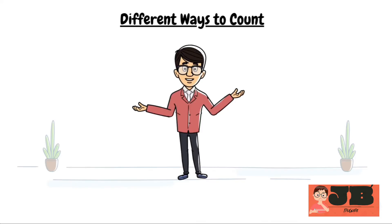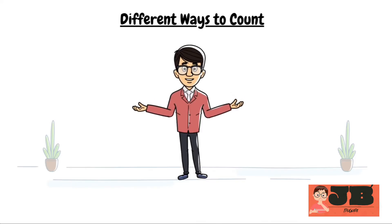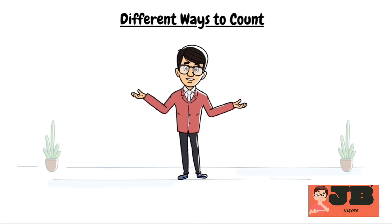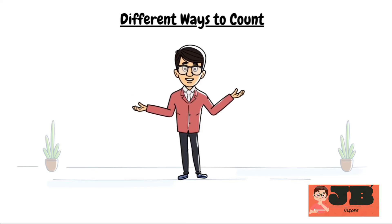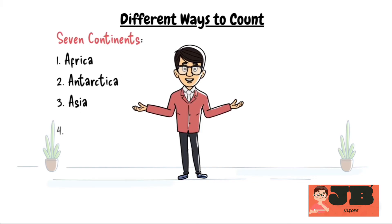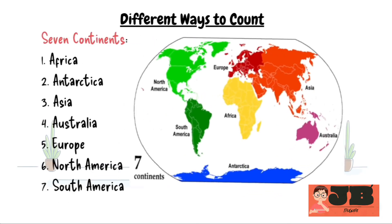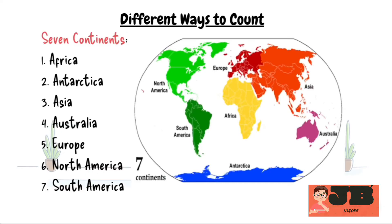The most widely adopted and commonly used count is 7 continents: Africa, Antarctica, Asia, Australia, Europe, North America, and South America.